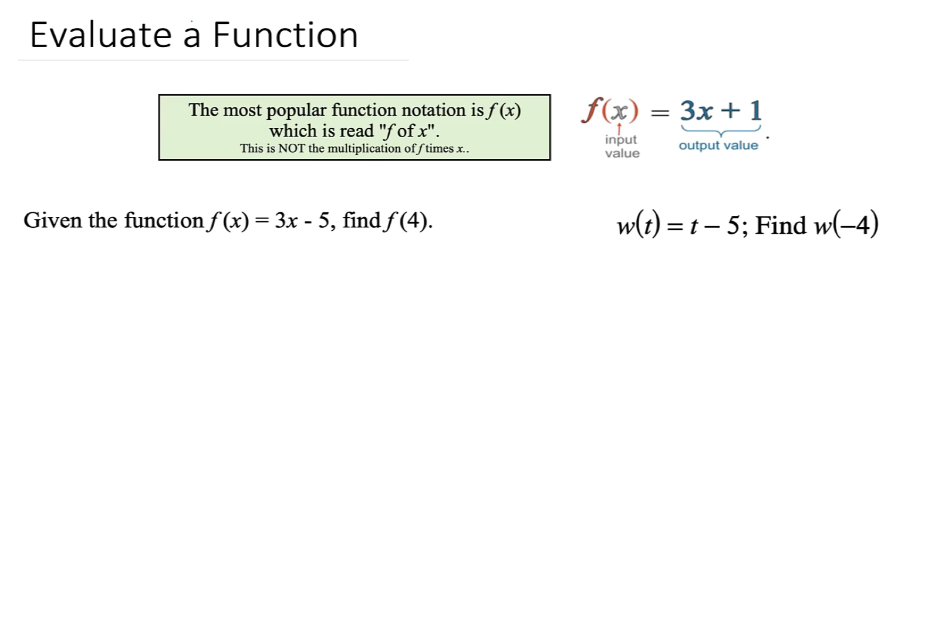When you're given a function, it's written like this. This function here is f of x. This does not mean f is multiplying by x. It is read f of x. The x here is your input value. That is what you put into the function, and this is our function here, 3x plus 1, which we call our output value.